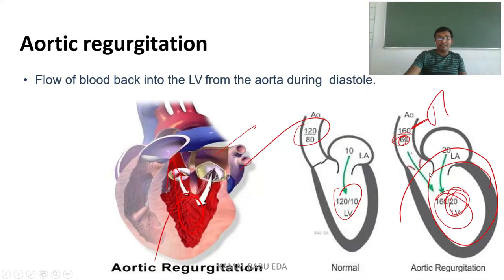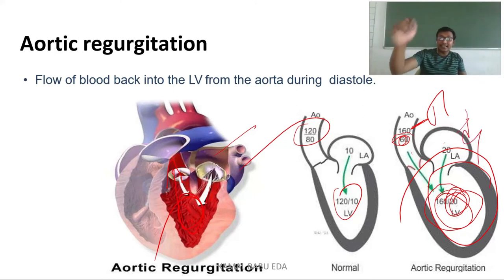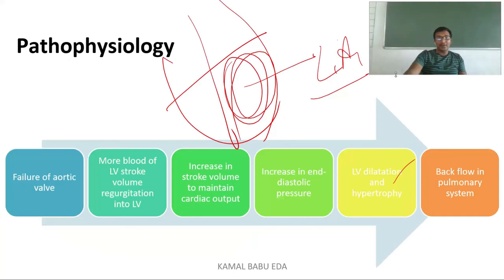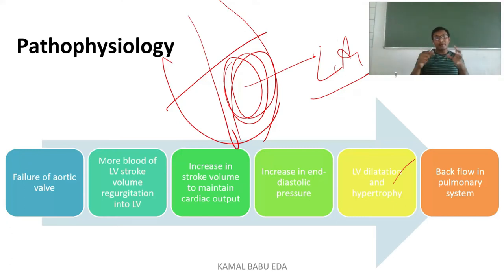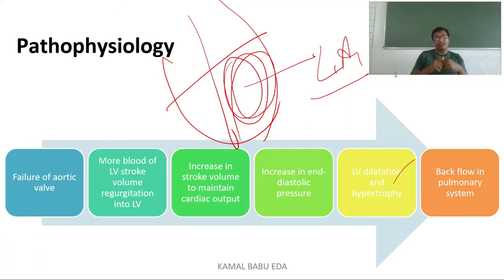With left ventricular dilatation and hypertrophy, due to increased pressure, the left atrium — which has lower pressure — gets affected. Blood backs up into the left atrium and causes pulmonary damage. In summary: aortic valve failure → blood accumulation in left ventricle → increased end diastolic pressure → left ventricular dilatation and hypertrophy → left atrium affected → pulmonary system damaged.